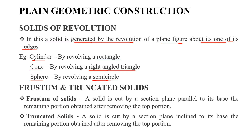The next category is truncated solids. The first is the Frustum of a solid: we take a solid, cut it with a section plane parallel to the base, and remove the top portion — the remaining part is the frustum. For a truncated solid, the cutting plane is inclined to the base, and the remaining portion after removing the top is the truncated solid.